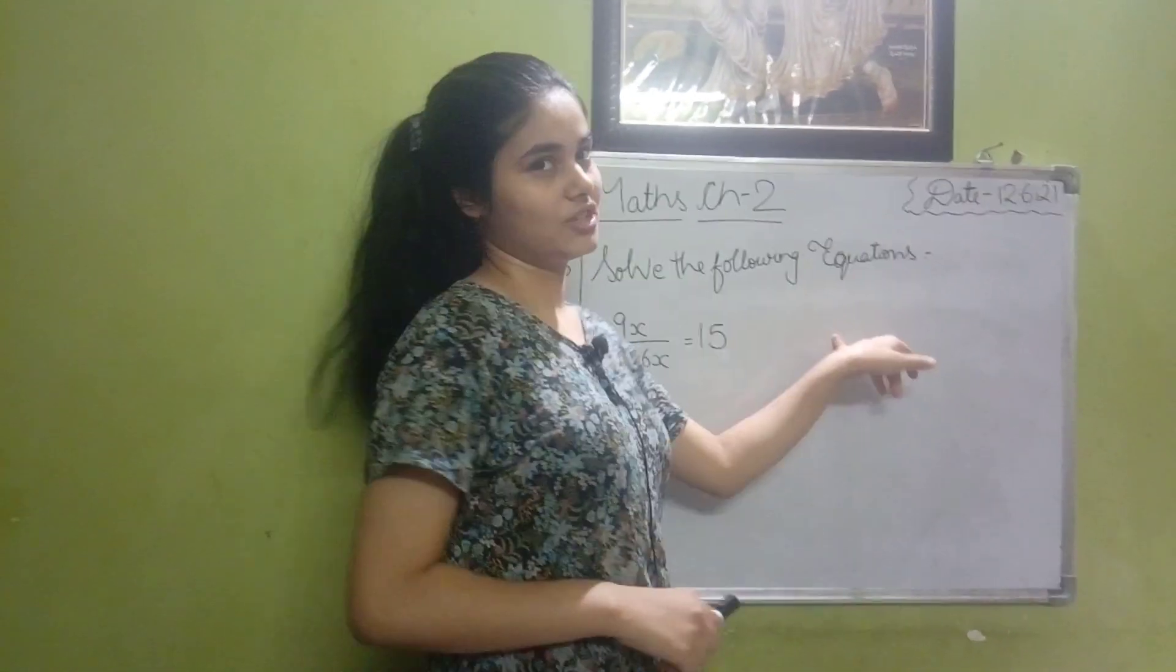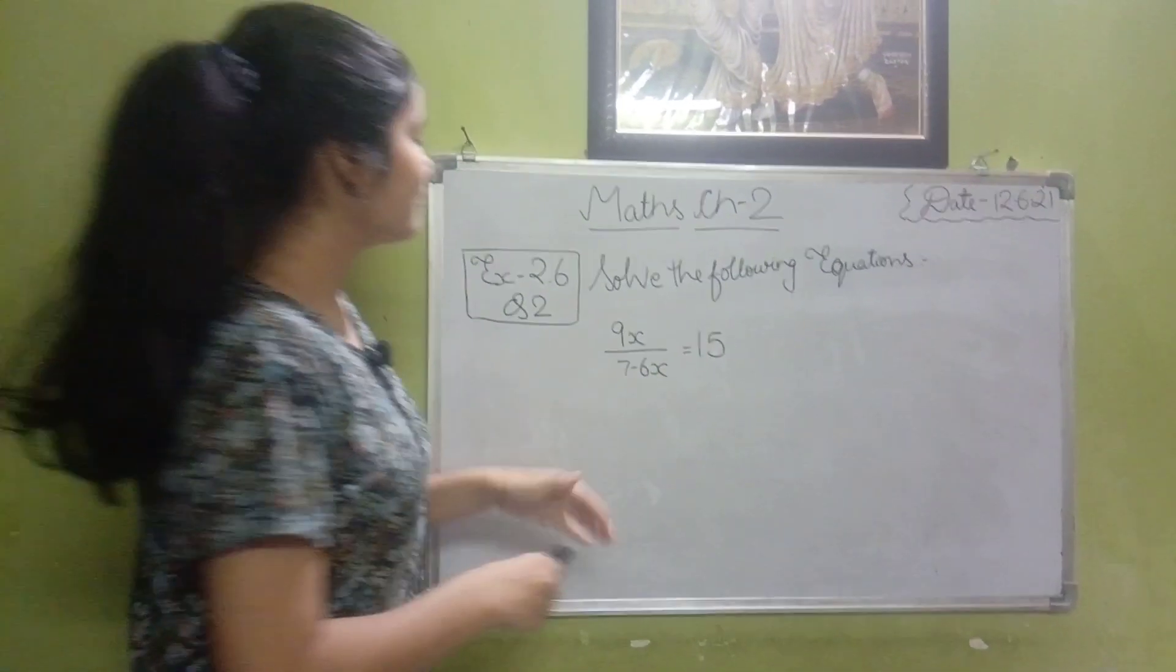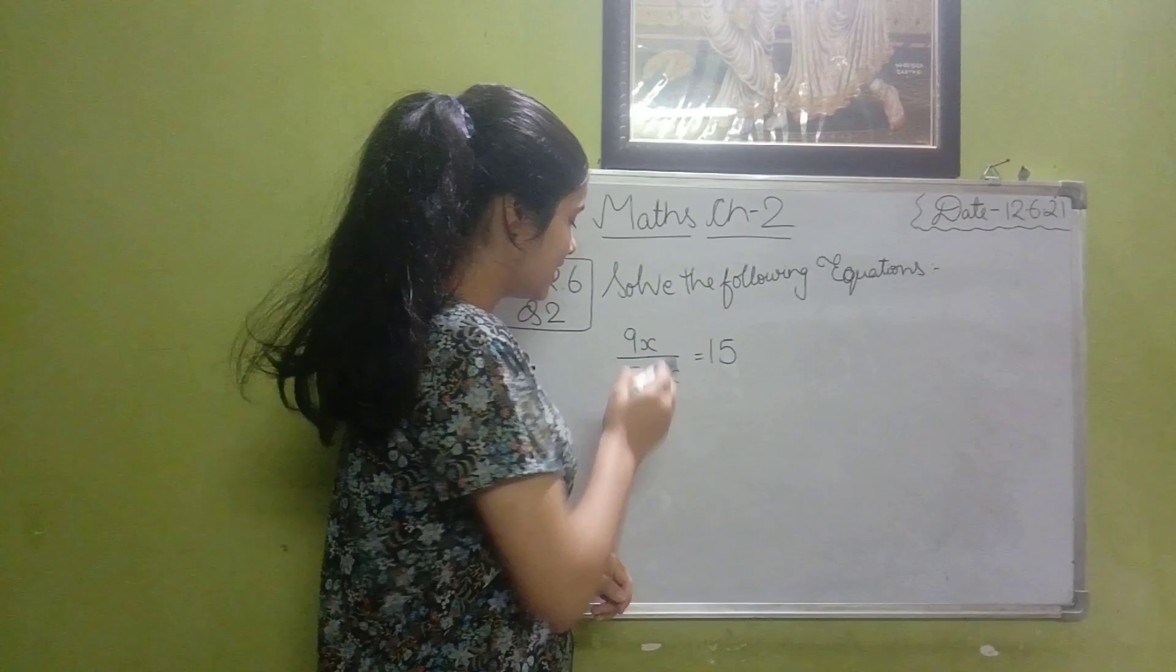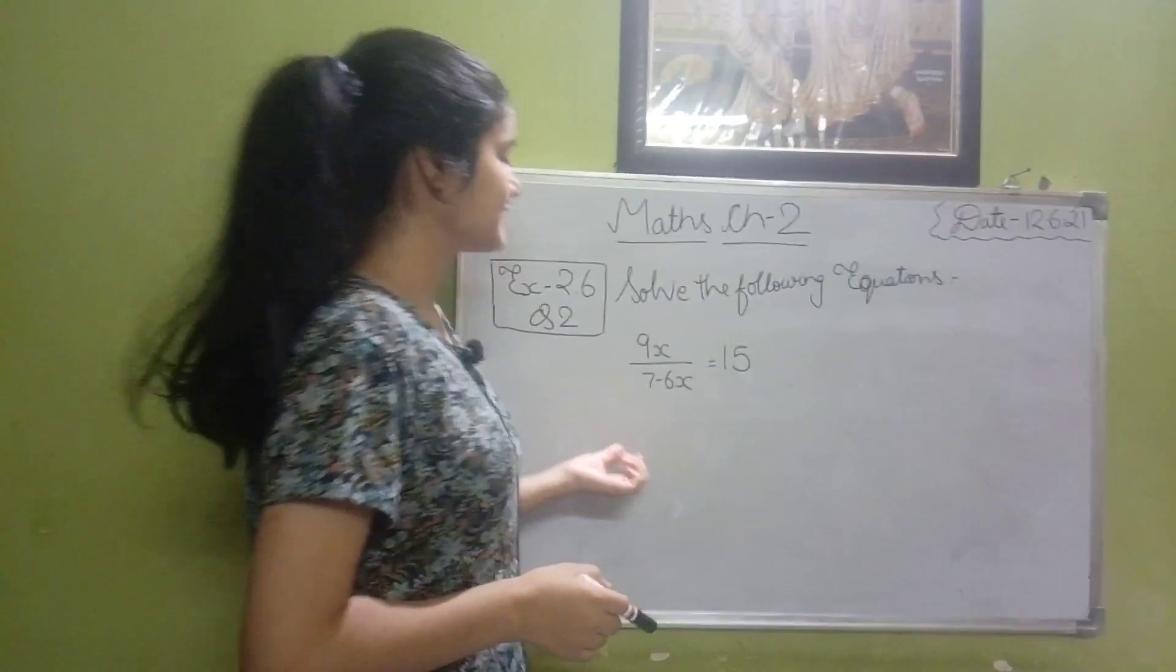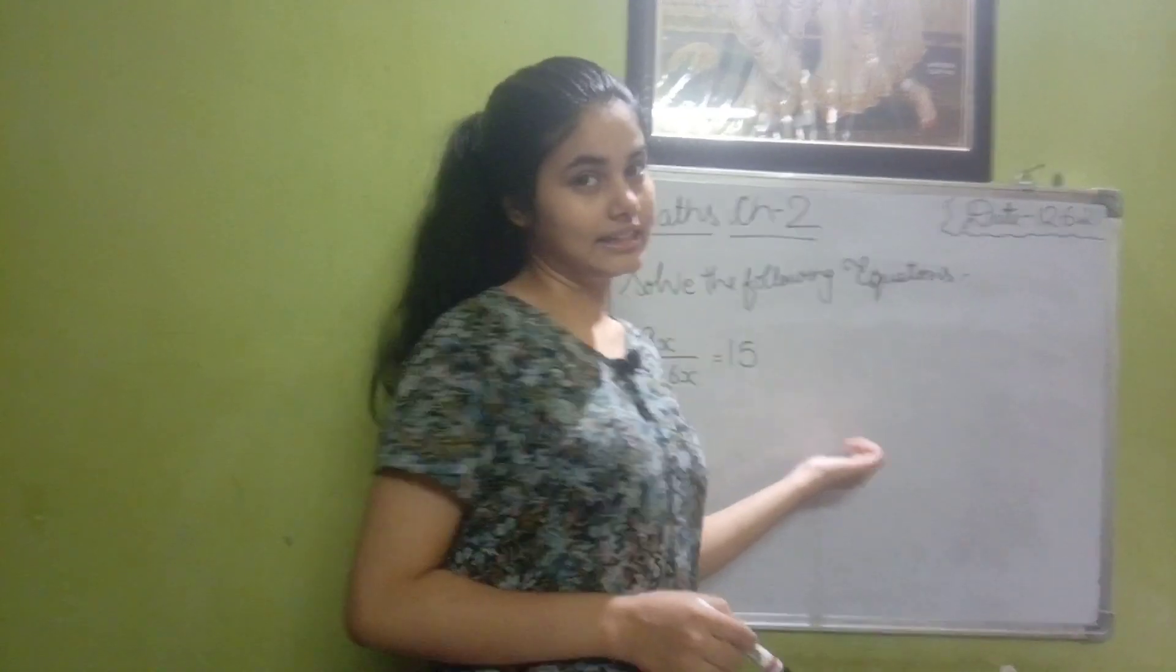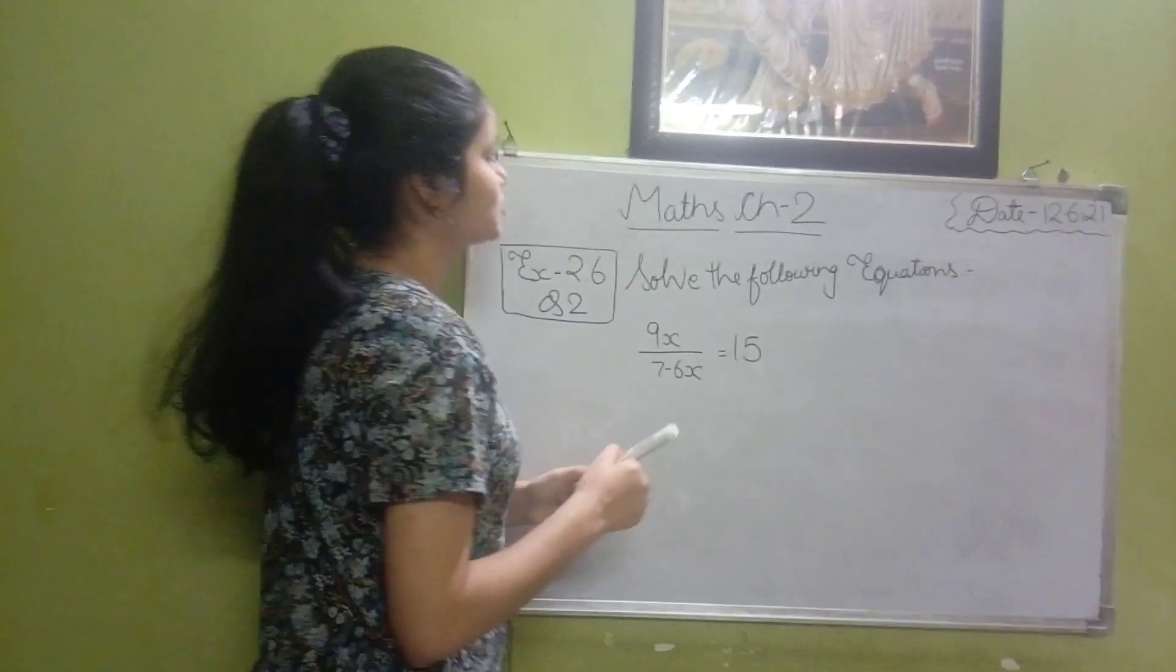I am going to solve the following equations. Our equation is 9x upon 7 minus 6 is equal to 15. Okay, let's solve this.